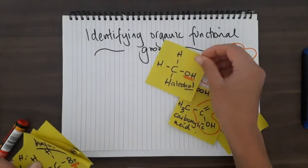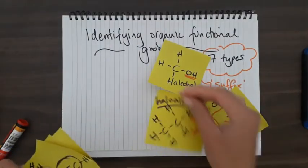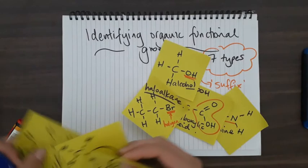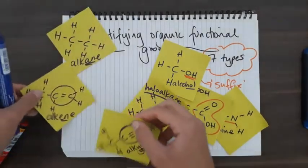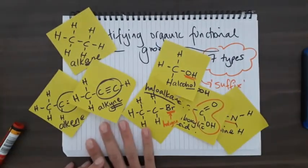So we have seven types of functional groups that we went through: alcohols, haloalkanes, alkanes, alkenes, and alkynes are all kind of lumped together as well.